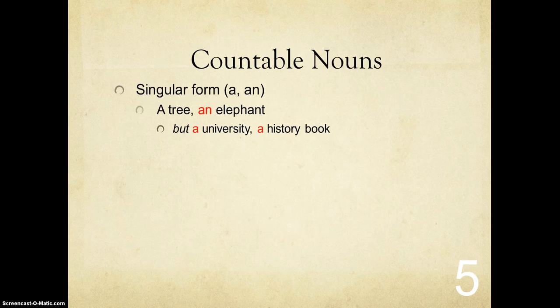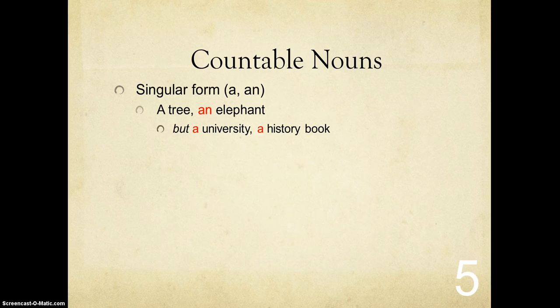Countable nouns have a singular form. They begin with a or an, or also the word the — we'll talk about that at another time. A tree, an elephant. Remember, I need to say an elephant in front of a vowel sound, or a word that begins with a vowel sound, like elephant.